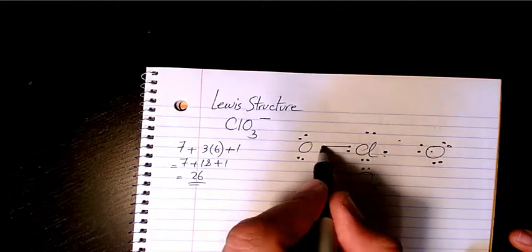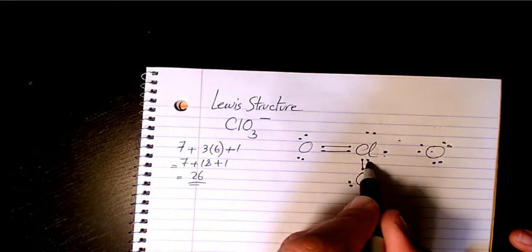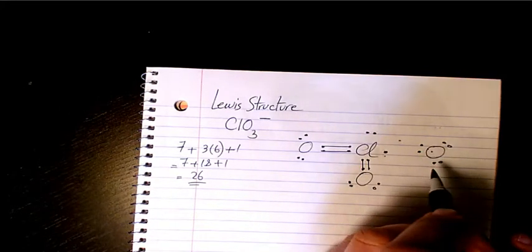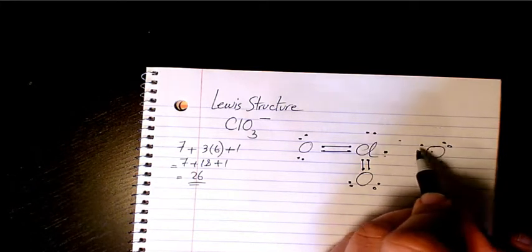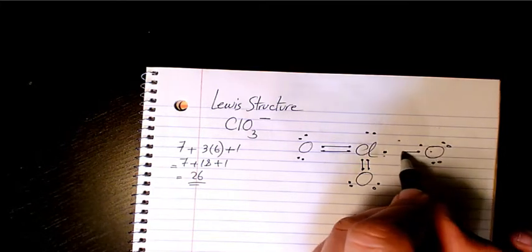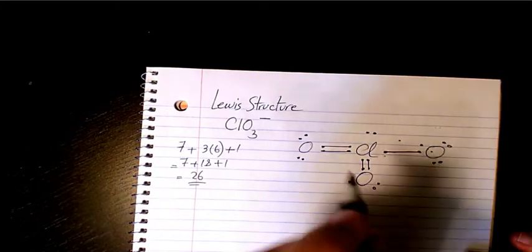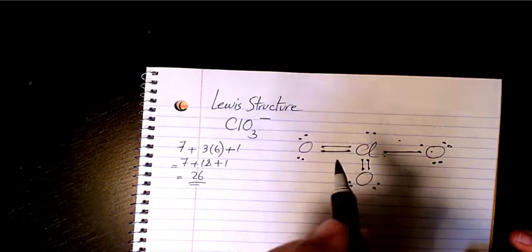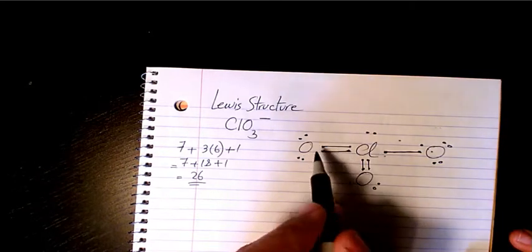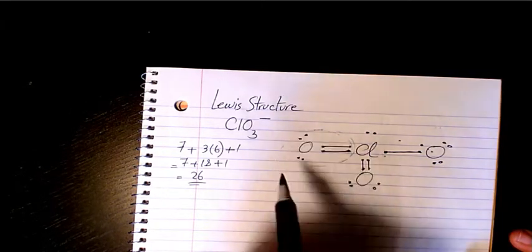So then I need to connect these dots to obey the octet rule. I'm gonna have single bond in here. So we have double bonds between chlorine and oxygen. As you see here, the octet rule is valid for oxygen: two, four, six, and eight. Two, four, six, and eight.